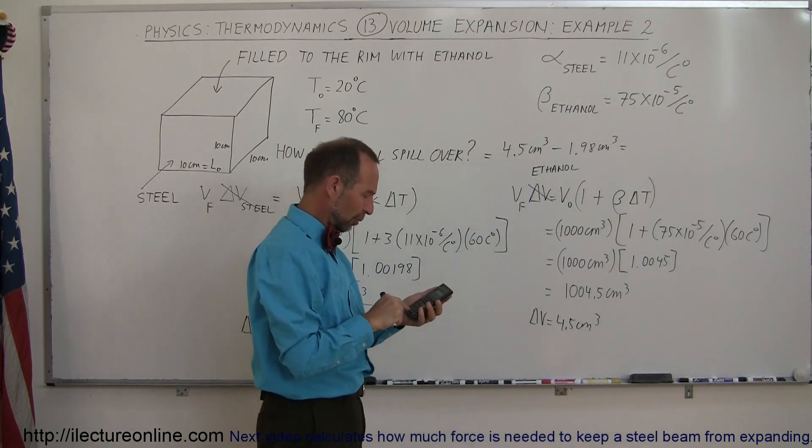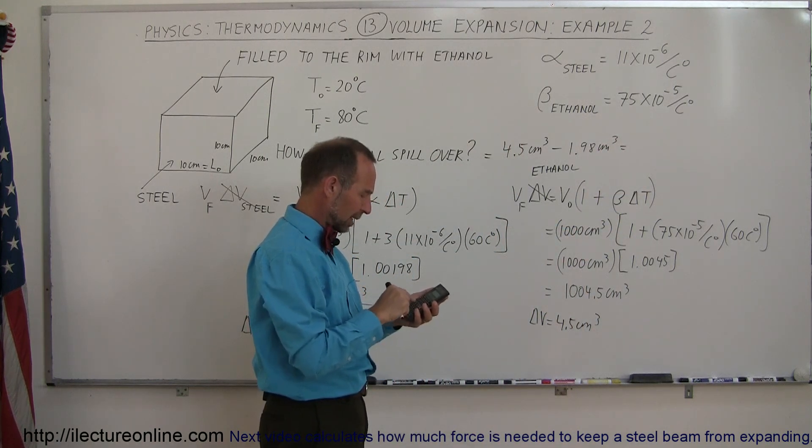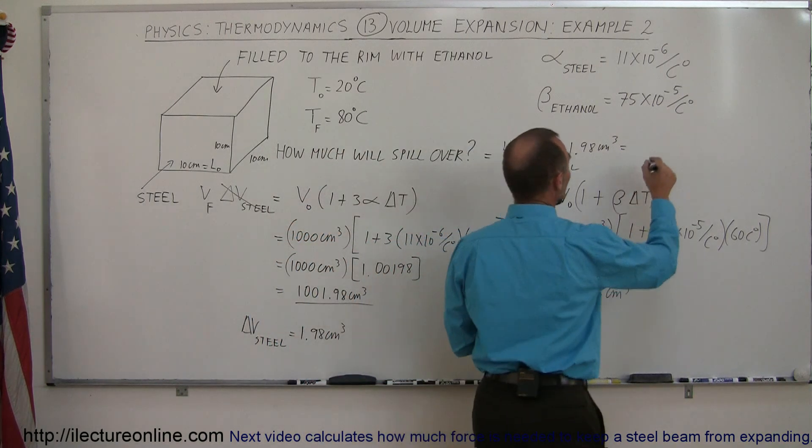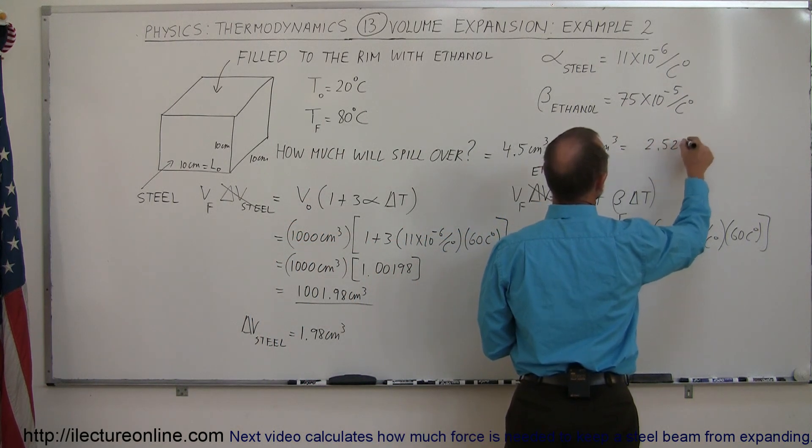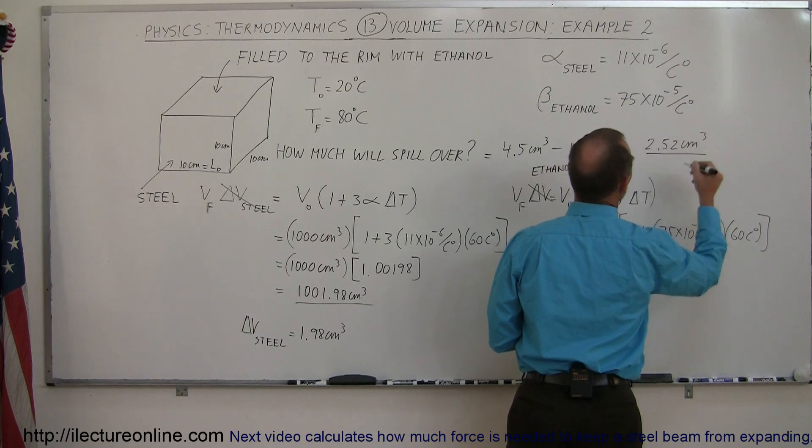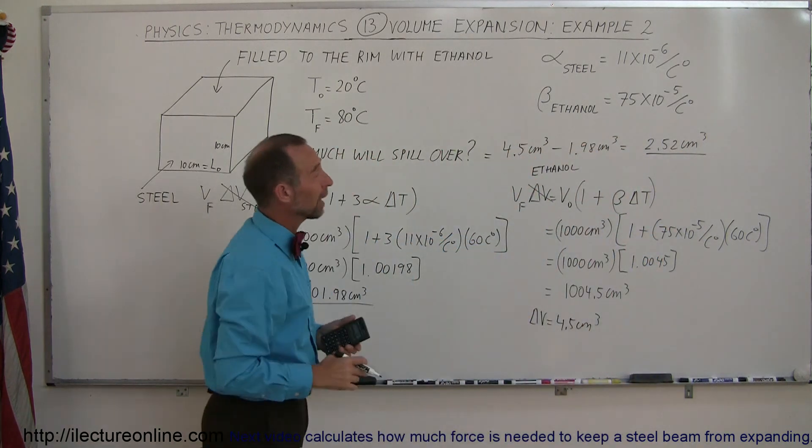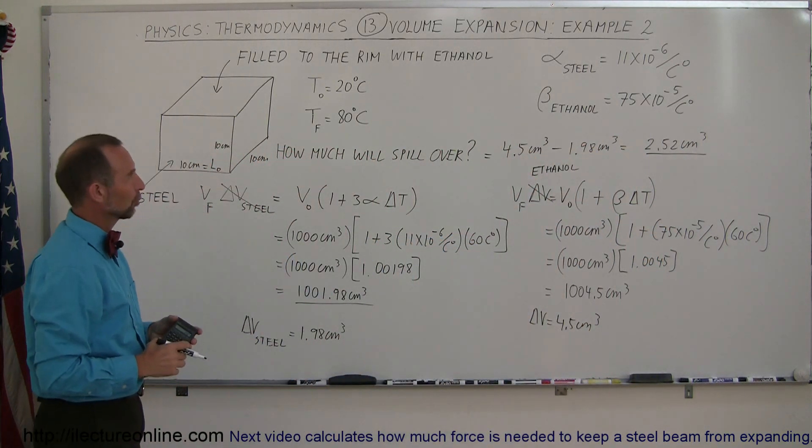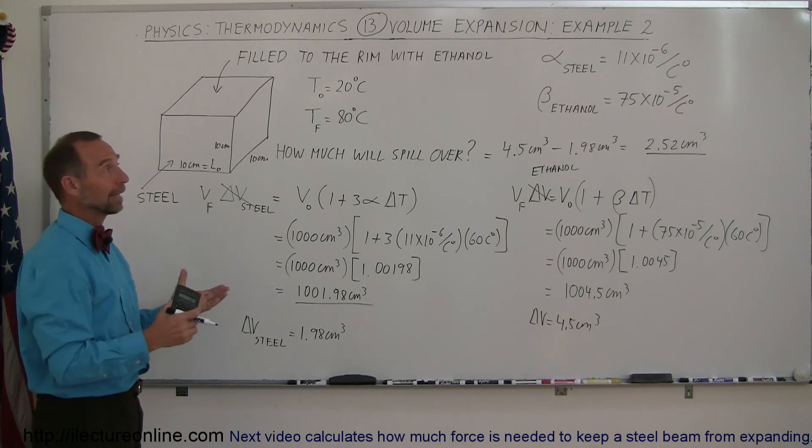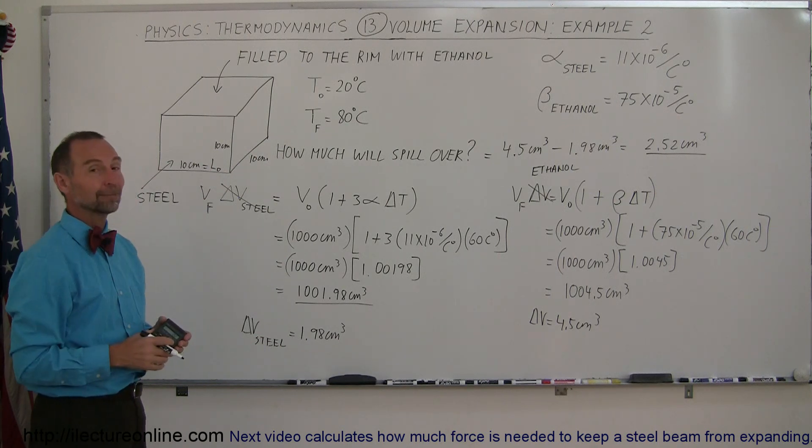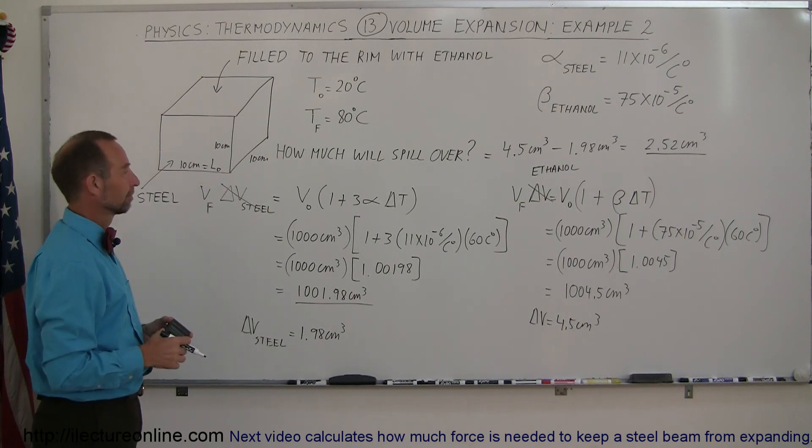And of course, when we take the difference, 4.5 minus 1.98 equals, and 2.52 cubic centimeters of ethanol will spill over the edge of the box when we heat it up from 20 to 80 degrees centigrade. And that's how you work out a problem like that.